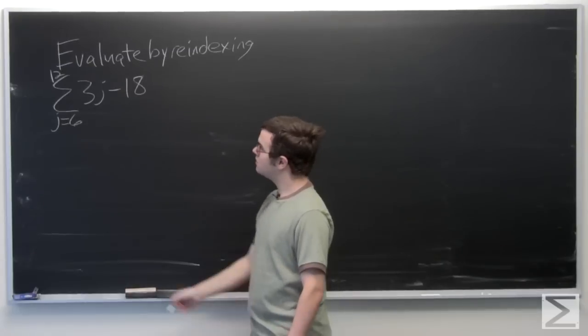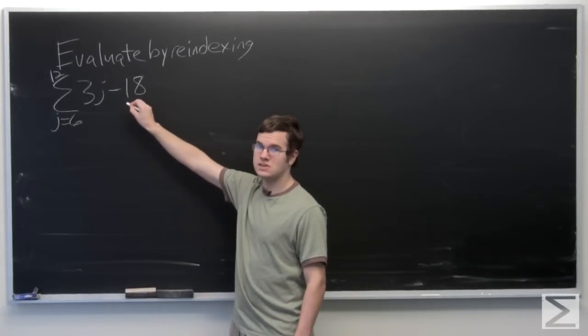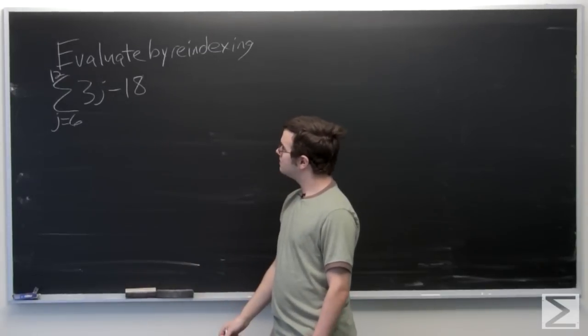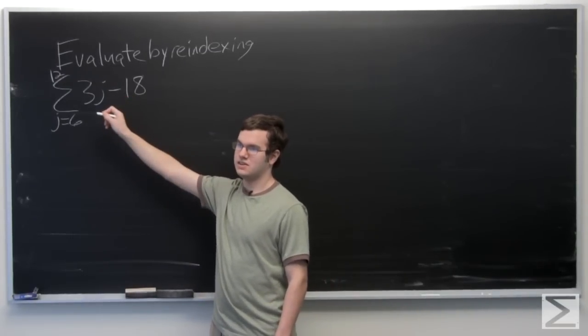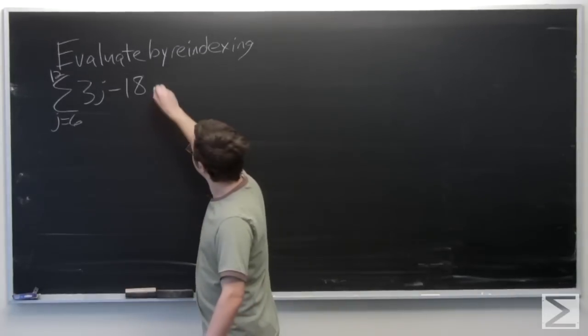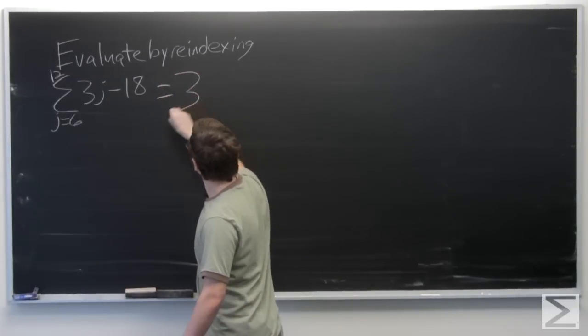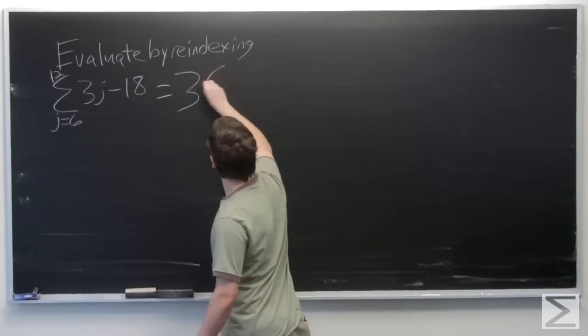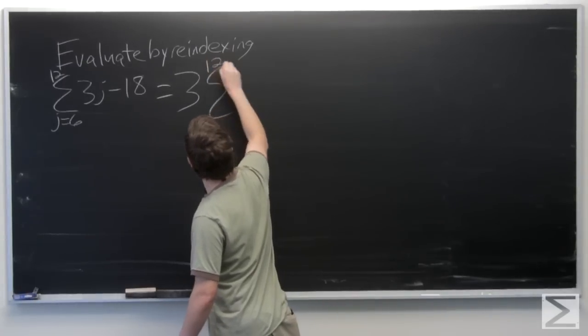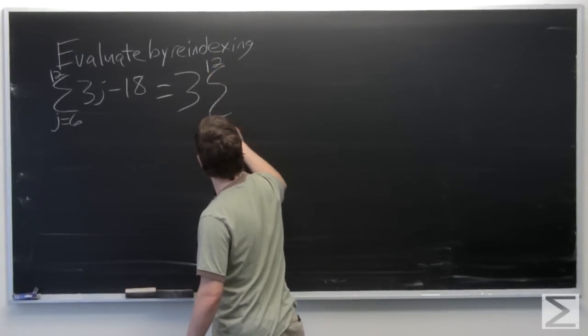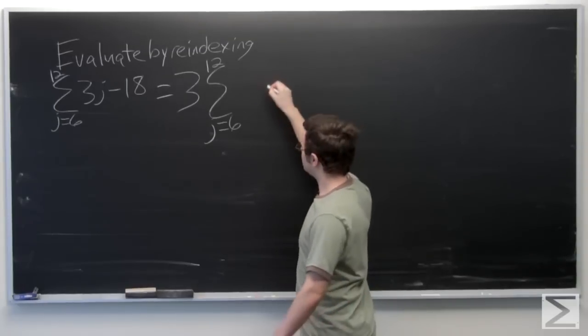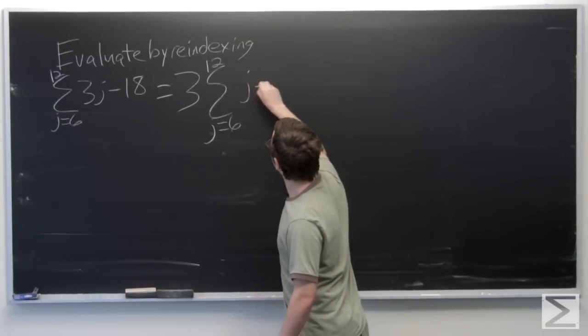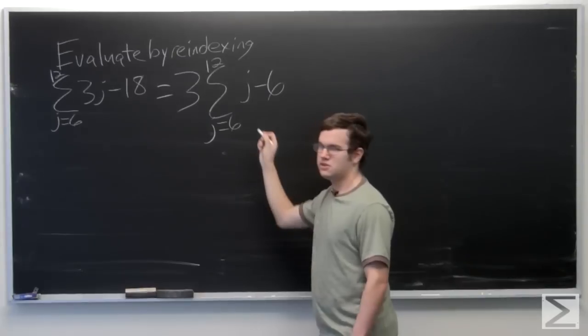Okay, so we see here 3j minus 18, and we can see that we can distribute out a 3 outside of the summation. And that leaves us with j minus 6 via the distribution property.